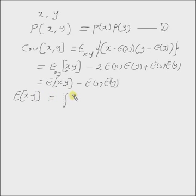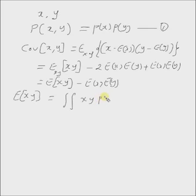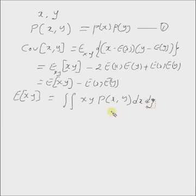The expectation of X times Y equals the double integral of x times y times the joint density p(x, y) dx dy. This is the definition of the expectation of the product X times Y.